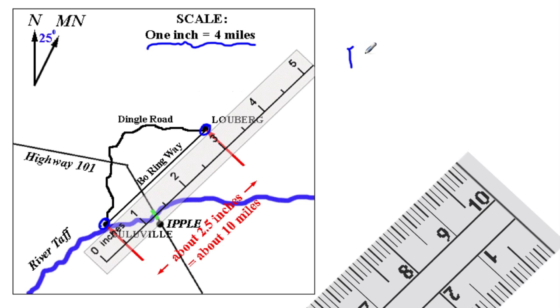If 1 inch, we write a ratio, is 4 miles, then 2.5 inches equals some mystery amount.